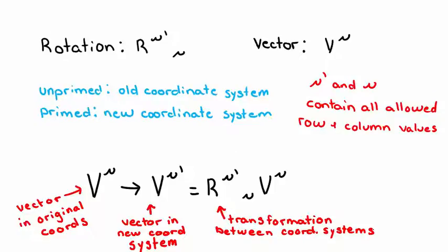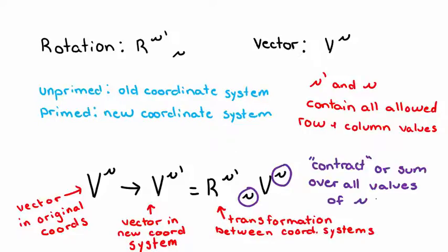Just like with any representation, we still need a rule for combining different elements. Here, we see that R has a lower index mu, and V has an upper index mu. When we see a repeated index like this one, where 1 is lower and 1 is upper, we contract, or sum, over all the allowed values for that index. The act of summing in this manner was first created by Einstein, so we call this notation Einstein's Summation Convention.